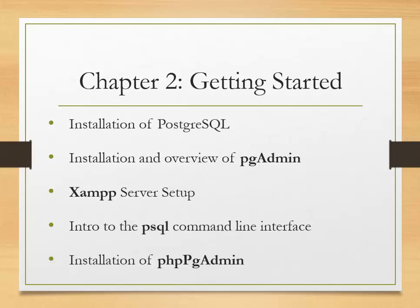In chapter two we'll get to install Postgres on a Windows machine. We'll have an overview of the PG admin tool that comes with Postgres. We'll set up an XAMPP server so that we can later build a PHP application using Postgres. We'll talk about PSQL and basic command line interfaces and commands, and we'll also install PHP PG admin, which is a database table management tool.